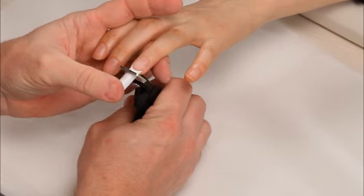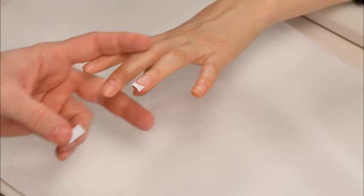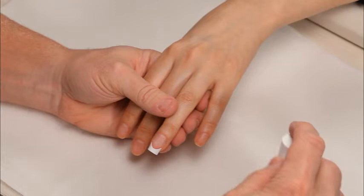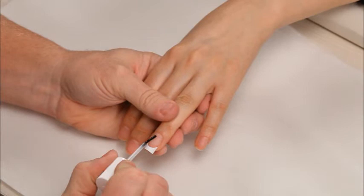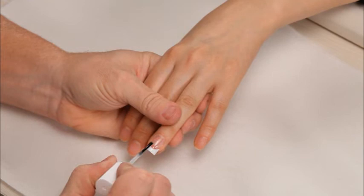I'm going to take our Flex Wrap Base and apply a coat across the whole nail. Then I'm going to take our Flex Wrap Crystal Powder.